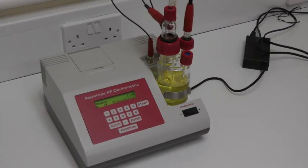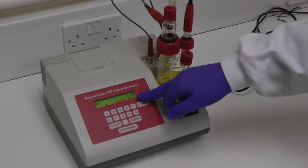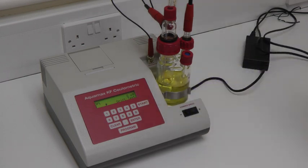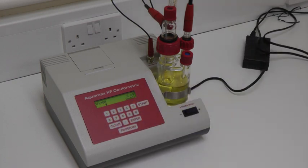After preconditioning is complete, the Aquamax KF moisture meter will monitor the background drift, and then move into the ready mode once this is stable. Once in ready mode, the keypad is enabled, and the instrument can be programmed.